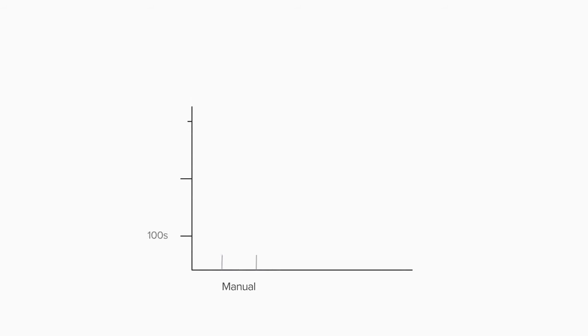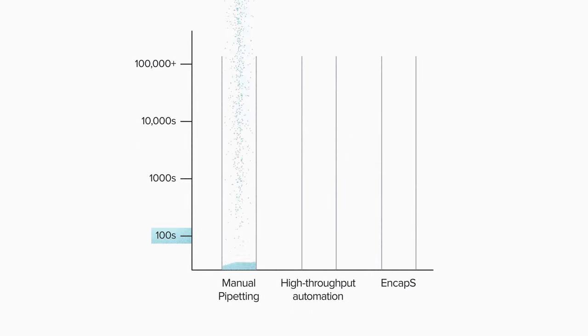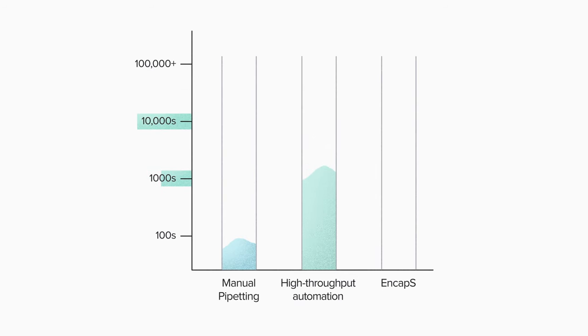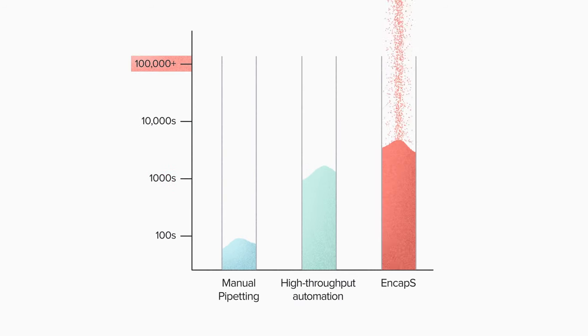The power of the NCAPS system is in the sheer number of beads it can screen. A human scientist could test maybe hundreds of microbes. With conventional lab automation, that number goes to thousands or tens of thousands. With a system like this, we can screen 100,000 or more microbes in a single run. Microbial selection is very much about sheer numbers, because we're looking for those rare, high-performing superstars.